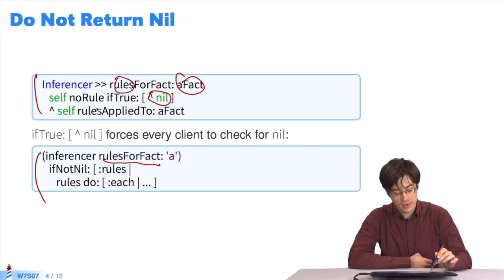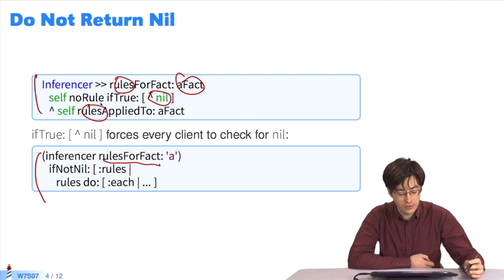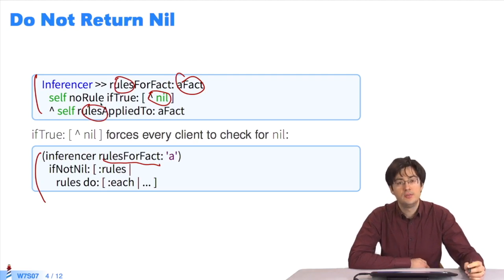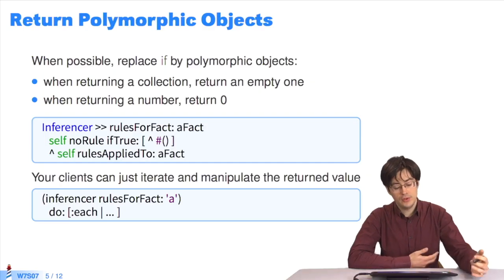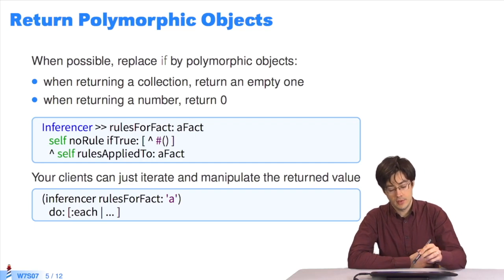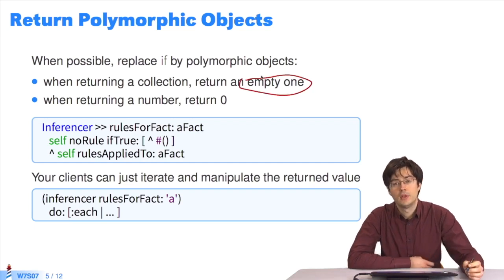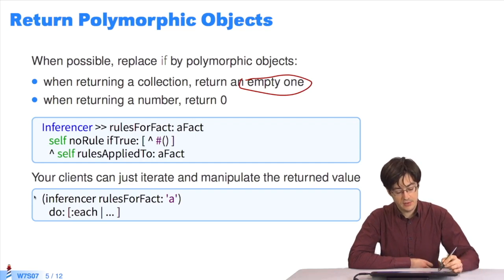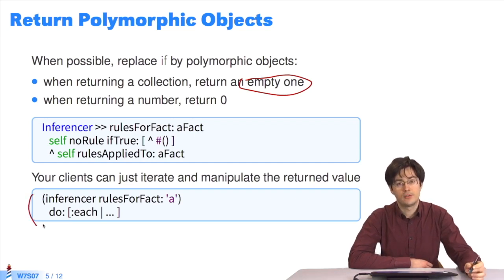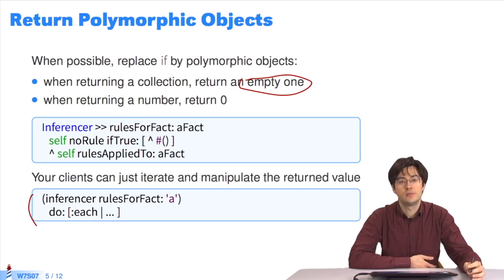Since we're using a plural term, the method will probably return a collection. An effective solution for avoiding nil in this situation is to return an empty collection. This works in many cases. Returning an empty collection instead of nil simplifies the code, because clients can simply iterate the collection, and if it's empty, nothing will happen.